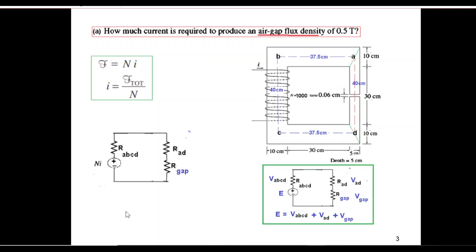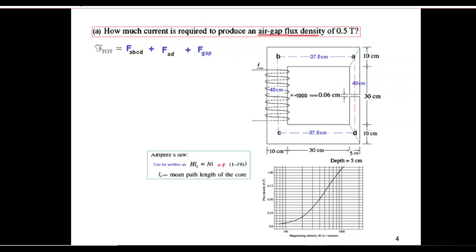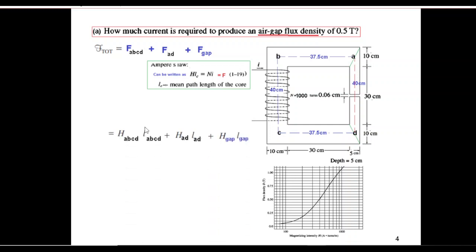Exactly the same technique we will follow here to find the MMF drops. So F_total is F_ABCD here, and then F_AD, and then F_gap. Now to find F we will use another formula that we have already learned: F can be written as H into L_C, where H is the magnetic field intensity and L_C is the core length, mean core length. So we can say that F_total can be written as F_ABCD plus F_AD plus F_gap.